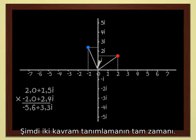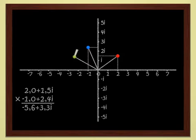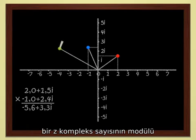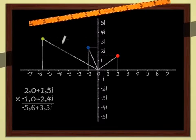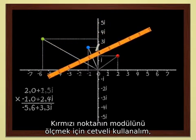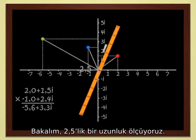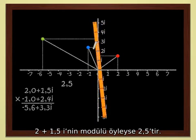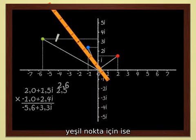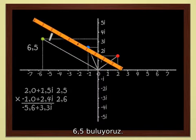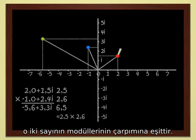It seems the right time to define two notions: the modulus and the argument of a complex number. The modulus of a complex number z is just the distance from the origin to the point that represents z in the plane. Let's use the ruler to determine the modulus of the red point, which is 2 plus 1.5i. Let's see. It measures 2.5. The modulus of 2 plus 1.5i is therefore 2.5. For the blue point, I get 2.6. And for the green point, which is the product of the two points, I have 6.5. As a rule, the modulus of a product of two complex numbers is just the product of the moduli of the two numbers.